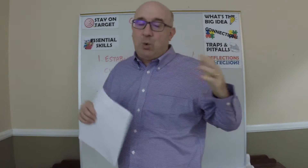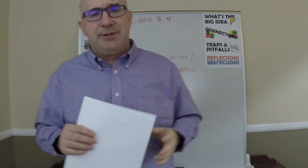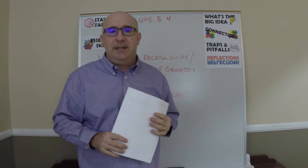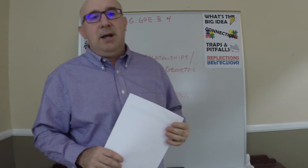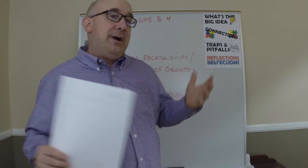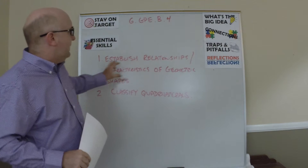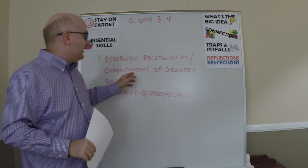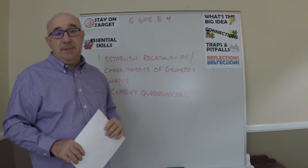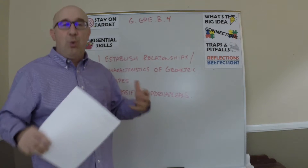That could be about quadrilaterals, it can be about triangles, it could be about distances — anything you want — whether a point is in, on, or out of a circle. So really this is about establishing characteristics of geometric shapes based off of coordinates.